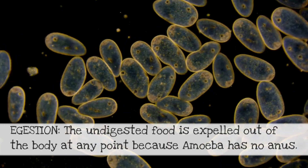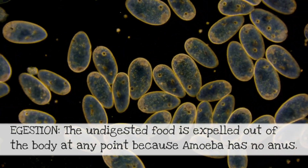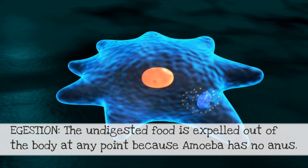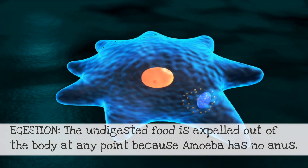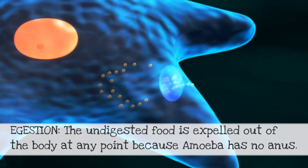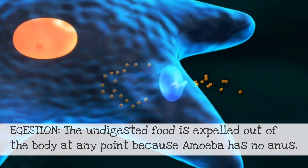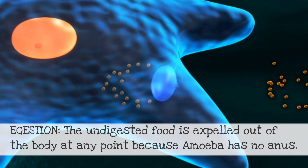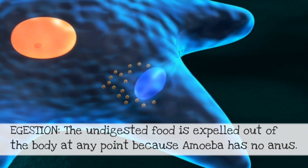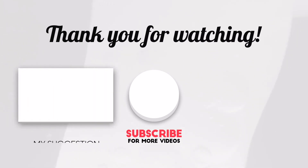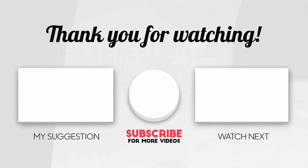The undigested waste is expelled out from the body at any point, because amoeba has no anus. The waste food is simply expelled out from any point on the body. I hope this has been helpful — please like, share, and subscribe. This video is from Aapki Padhai.